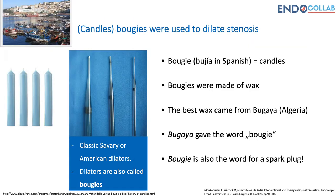As you will see, bougie actually means dilation. Originally the word bougie came from Bougaia, a city in Algeria where the best wax was produced. So wax became named bougie. And as you probably recall, in the past, candles were used to do dilation.